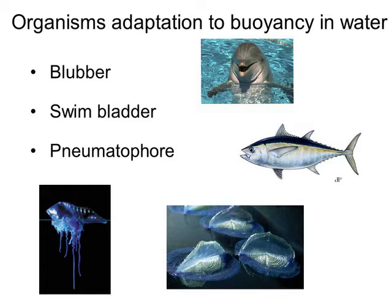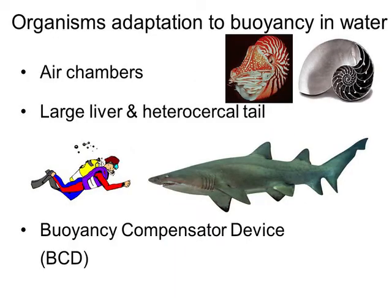If a fish swims down to depth, it can release air from the swim bladder to sink down; if it wants to go back up, it fills the bladder back up with air to rise to the surface. Jellyfish have gas floats that let them stay near the surface — those gas floats are known as nematophores. On the next slide you'll see the nautilus at the top, which uses air chambers.